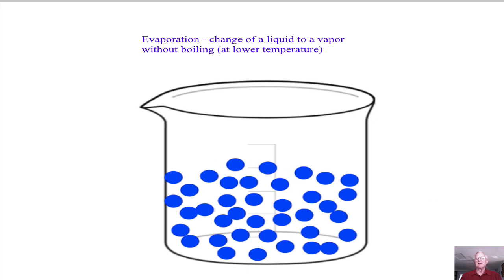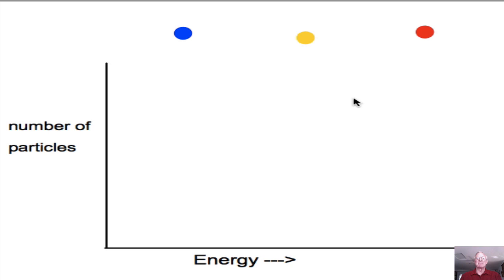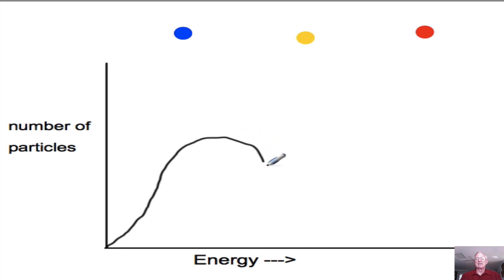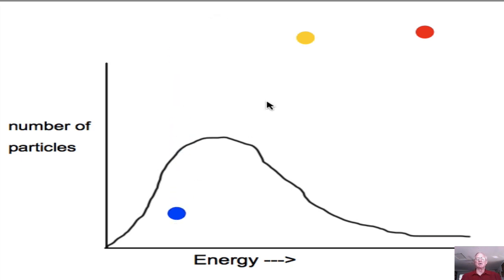Within this beaker, not every molecule, not every particle has the same amount of energy. And if we were to come up with a graph of energy distribution versus the number of particles — number of particles on the y-axis and the energy on the x-axis — we would see a few particles of very low energy, a larger number of particles with an intermediate amount of energy, and then a few particles that are much higher in energy, giving a distribution curve. To make this easier to understand, we'll color code the slow-moving, low-energy particles in blue, the intermediate particles in yellow, and the very high-energy, fast-moving particles in red.